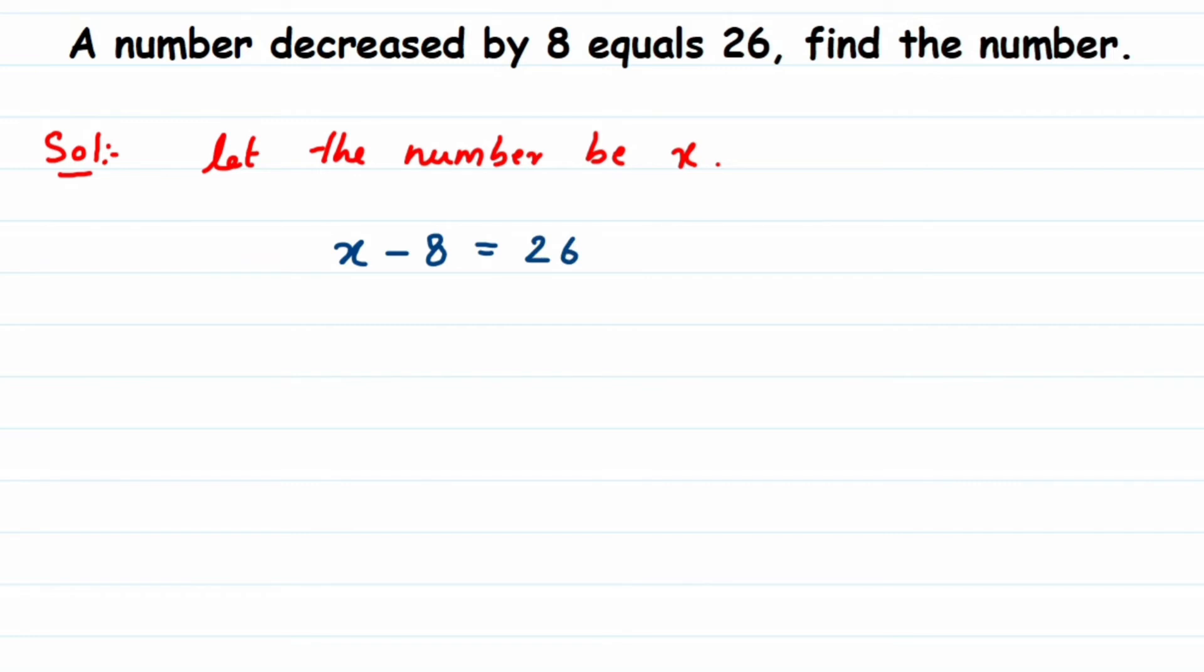To form a simple linear equation we have to find out the x value. So to get that, I'm going to transpose minus 8 to the other side. Minus 8 will become plus 8, so x is equal to 26 plus 8, which is nothing but 34. So x is equal to 34.